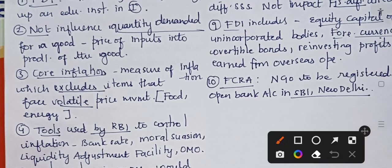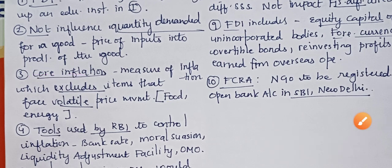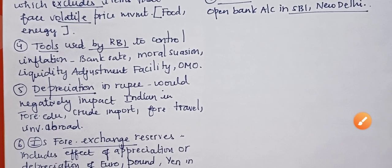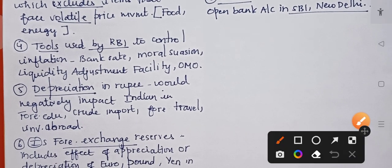The next fact is related to core inflation. This is a measure of inflation which excludes items that face volatile price movement, like food, energy, etc. So headline inflation minus food or energy inflation is called core inflation.